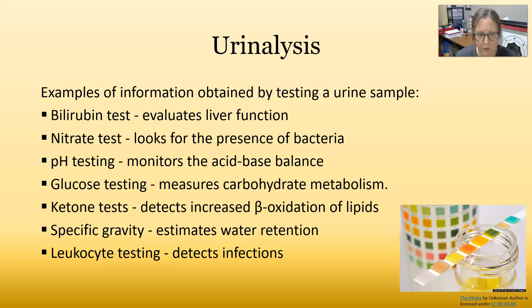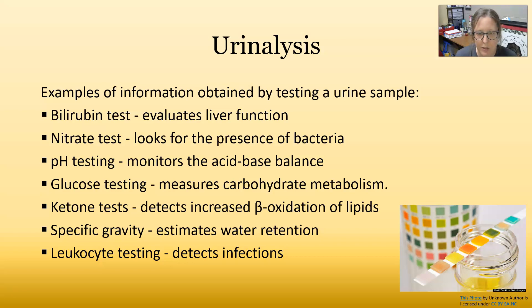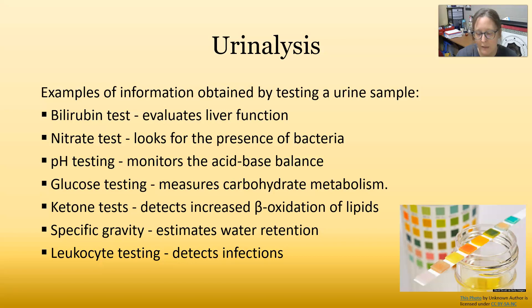The nitrate test looks for the presence of bacteria — especially gram-negative bacteria — which will cause a nitrate test to become positive. The pH test monitors the acid-base balance. Normal blood pH is 7.4, so slightly alkaline. We get rid of excess acid through urine. The more acid the urine is, the more acids we're probably producing in the body, as production of urine is part of the body's effort to maintain acid-base balance.